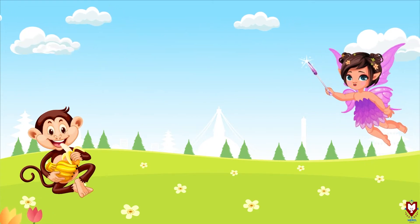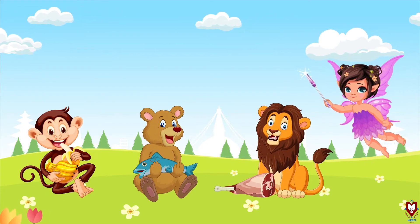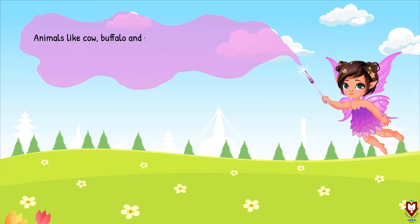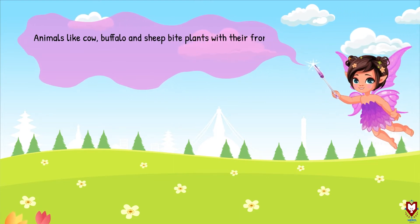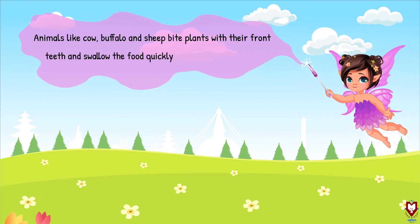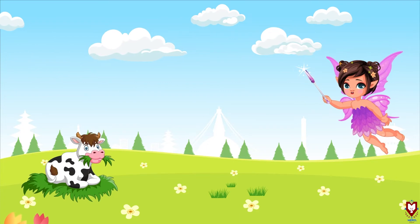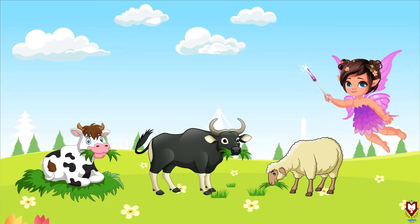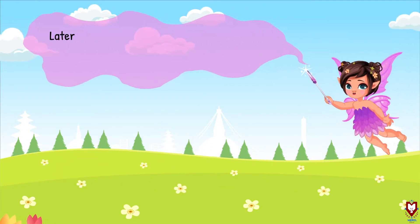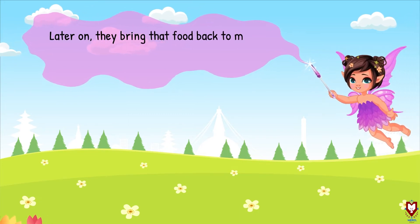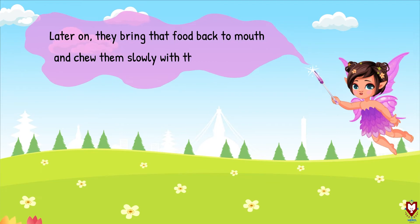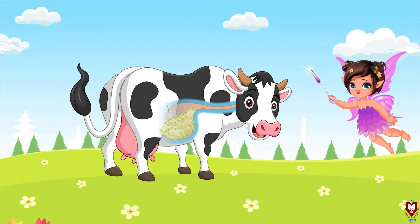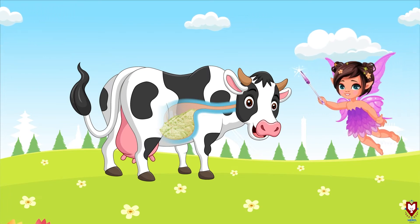After knowing what animals eat, let's learn how different types of animals eat. Animals like cow, buffalo, and sheep bite plants with their front teeth and swallow the food quickly without chewing them. Gai, baishi ra bheera jastha janavar le agariko daat ko elb le ghas patto ke ra dhere na chabai nilne garchan. Later on, they bring that food back to their mouth and chew it slowly with their back teeth.